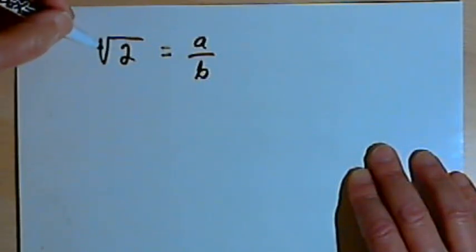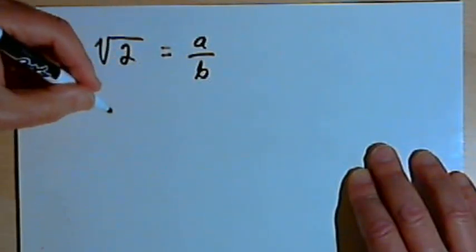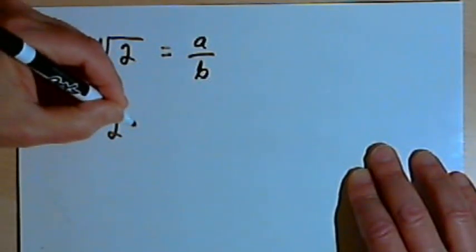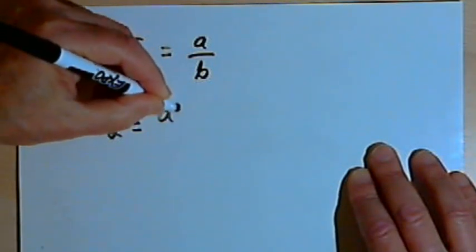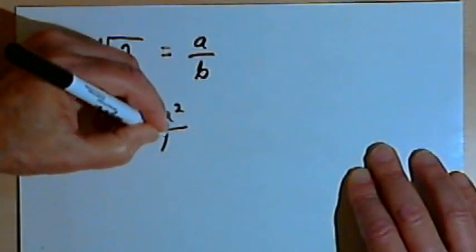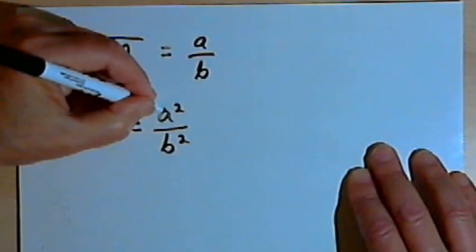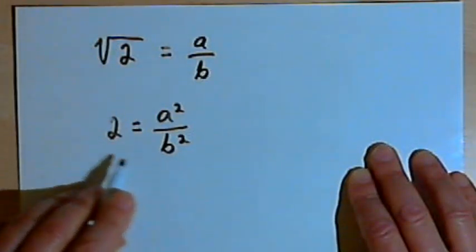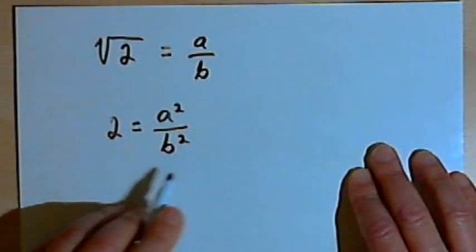So I've got the square root of 2 equals a over b. I'm going to get rid of my radical sign by squaring both sides. So when I square the square root of 2, I just get a 2. And when I square a over b, I get a squared over b squared.